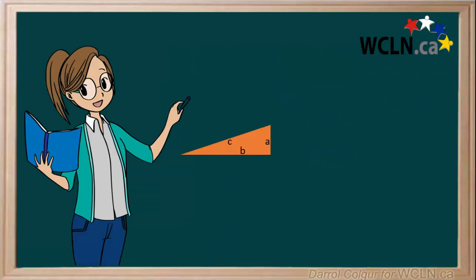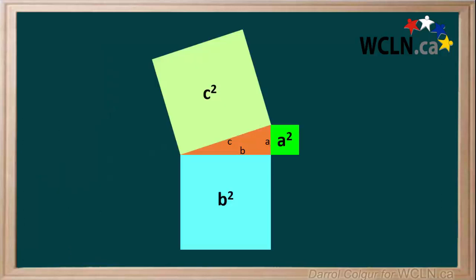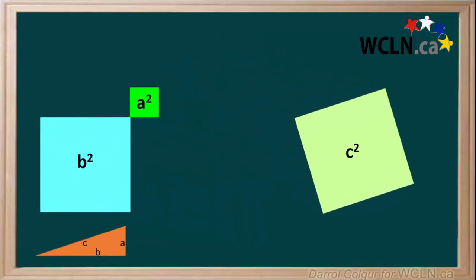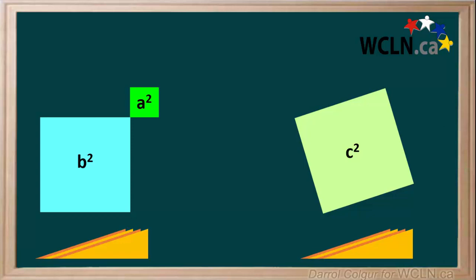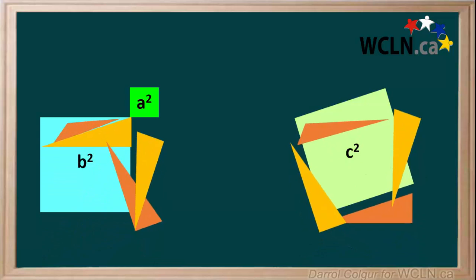This proof works no matter what dimensions our right triangle is. Here's a right triangle that is wider and shorter than the previous one we worked with. We'll add squares to this just like we did to the previous one. A squared, B squared, and C squared. And move things around like this. We'll make identical copies of our triangle and fit them around our squares.